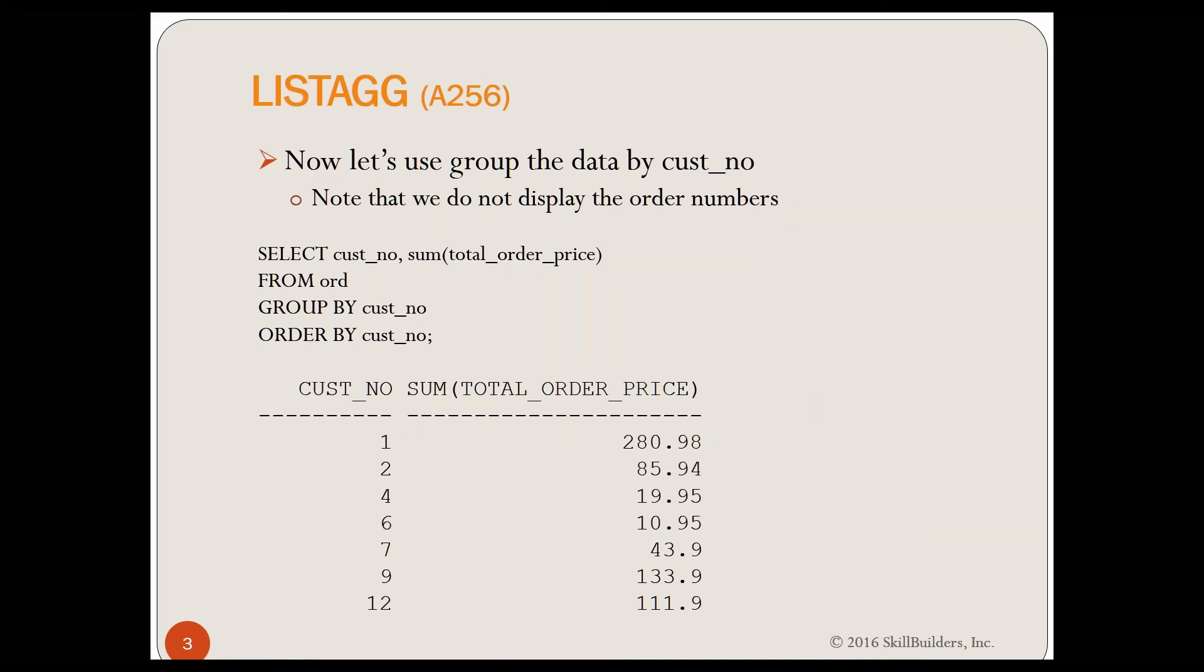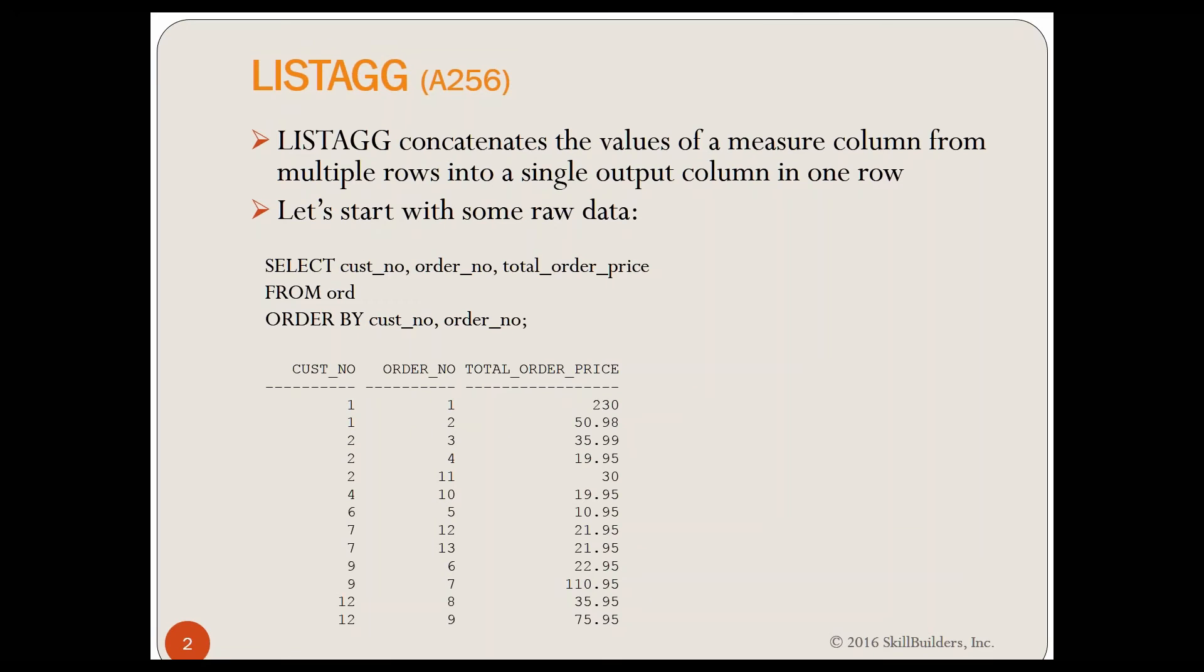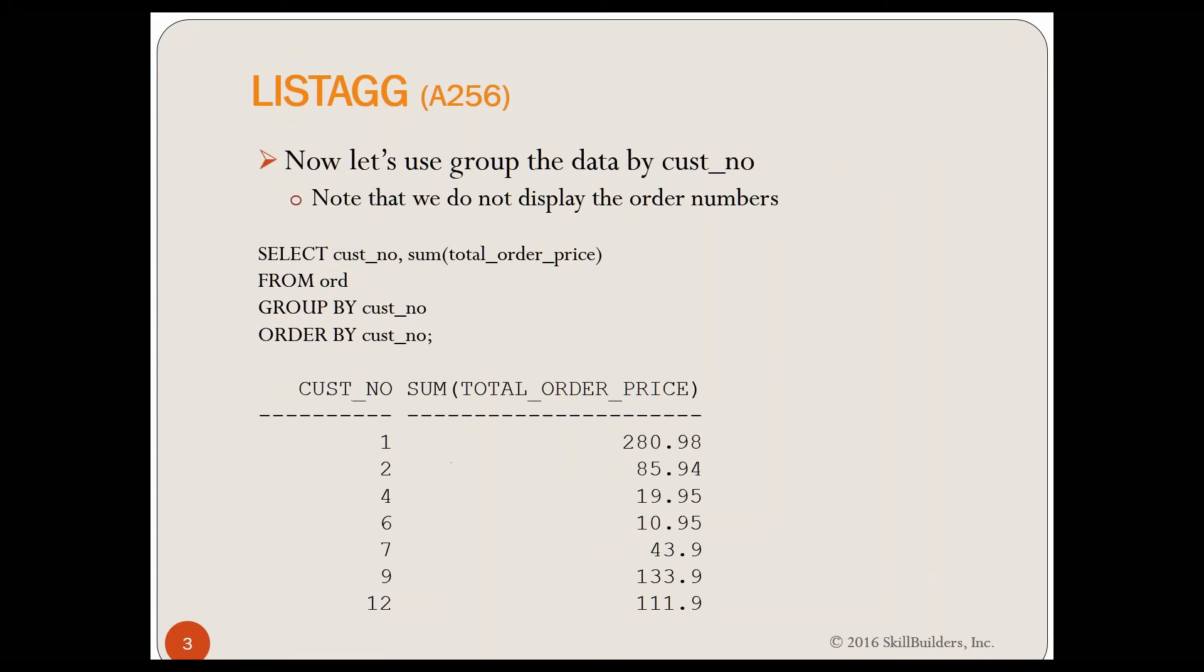We're good. We have the summary data, but notice what we do not have. We do not display the order numbers. On the previous slide, we had all the order numbers, but since we're grouping it by CUSNO, we have left off the order numbers. We don't see that. We would like to see the order numbers there.